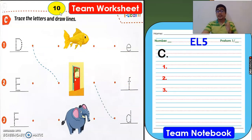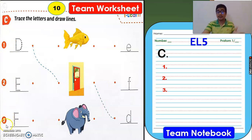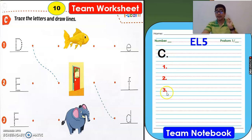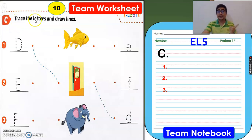Please open on page 10. Team worksheet, Activity C. We have three questions: one, two, and three. For the notebook, please write letter C, numbers one, two, and three. So let's start. Activity C: trace the letters and draw lines.